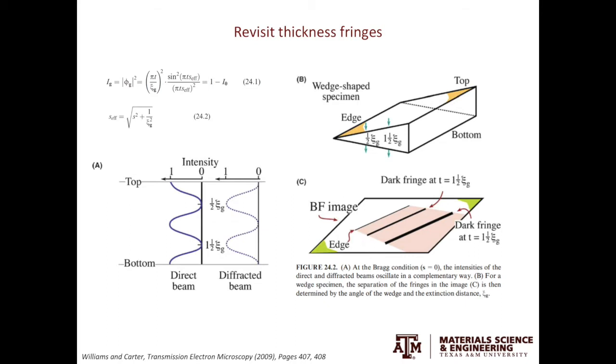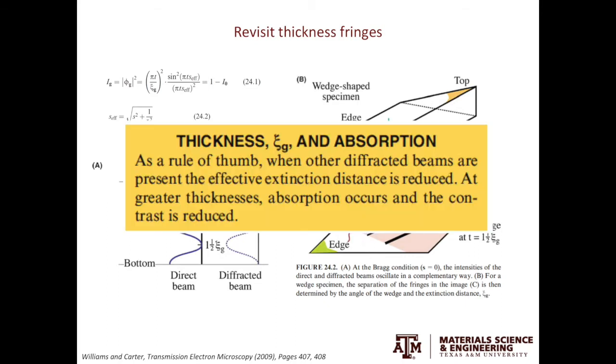There are a couple notes here. You see thickness fringes most prominent when you do the two-beam condition. When you have other diffracted beams present, the effective extinction distance is reduced. So you don't really see those thickness fringes. Another thing is when the sample is very thick, absorption will take place and the contrast of thickness fringes will be reduced as well.